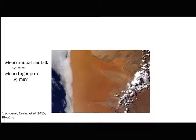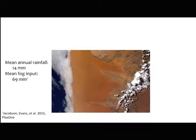A little more about the Namib: how dry is dry? The mean annual rainfall is 14 millimeters. In Michigan it's 1000 or more. Even somewhere considered dry, like Colorado, annual rainfall is around 300 to 350 millimeters. So this is really dry — and I'm talking about the western side of the Namib.